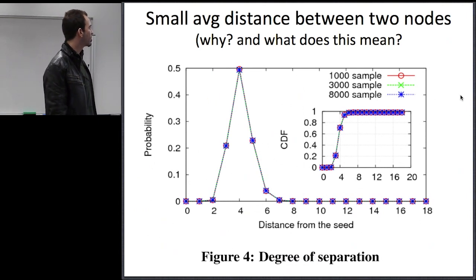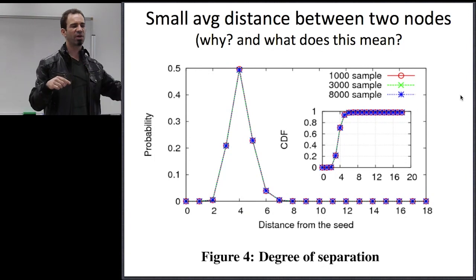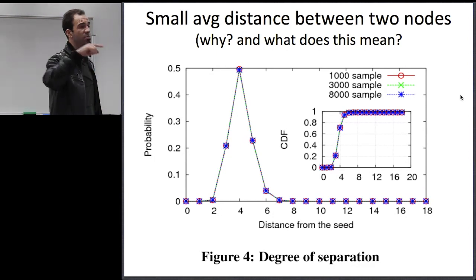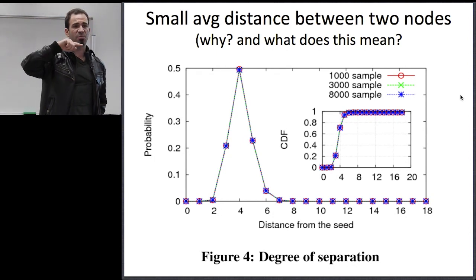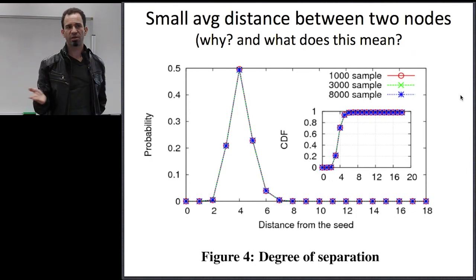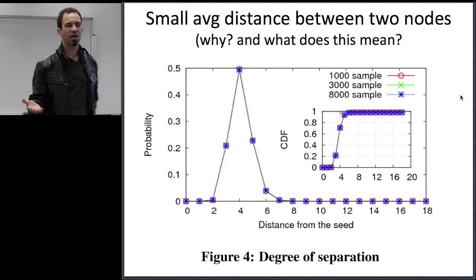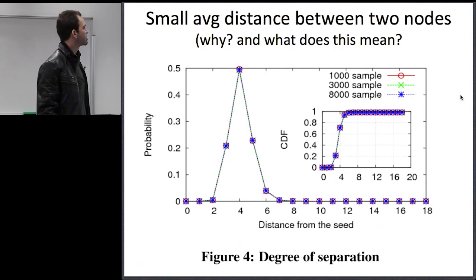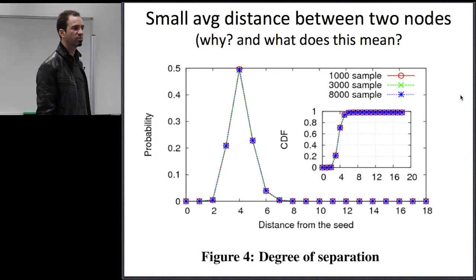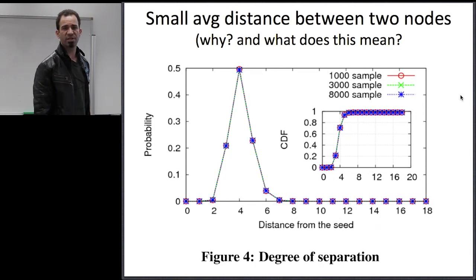The next thing to look at is the average distance between any two nodes. If I pick two random nodes, how many hops does it take to get between them? This isn't saying every message you send goes that many hops — it's the maximum retweet case. The graph shows a big peak at four. So if I pick two random people, most of the time it takes four jumps to get from one to the other.